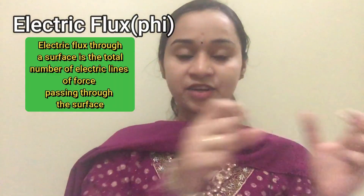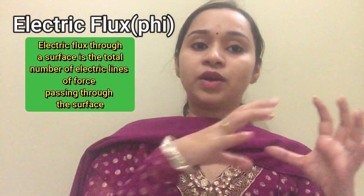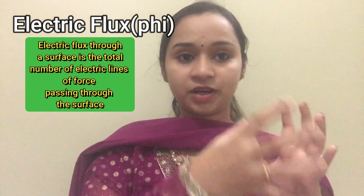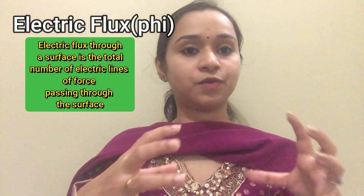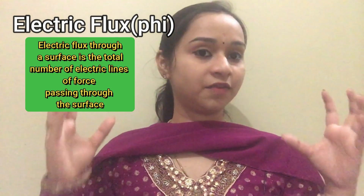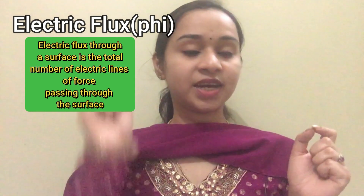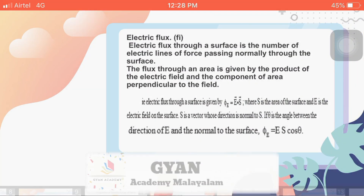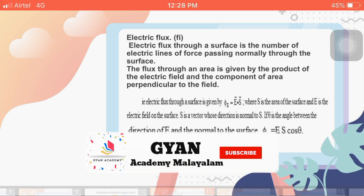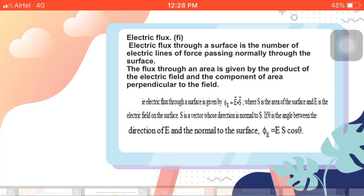Electric flux is defined as the electric lines of force passing through a particular surface — how many lines of force are passing through it is called electric flux. It is represented by phi, the Greek letter phi. Electric flux through an area is given by the product of the electric field and the component of the area perpendicular to the field.